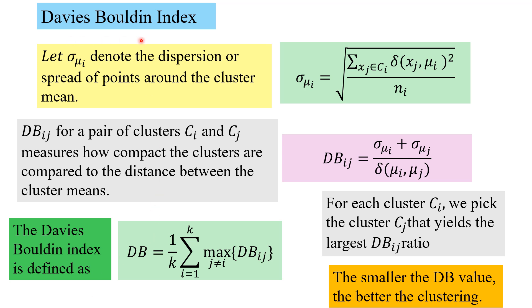For the Davis-Bouldin index, we will first find out the dispersion or spread of points around the cluster mean, computed for a cluster C_i. Sigma_mu_i is computed as the square root of the within-cluster variation: the squared distances summed over the whole cluster, divided by the number of points.